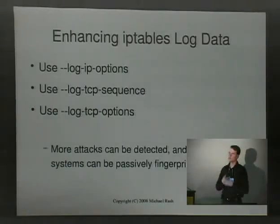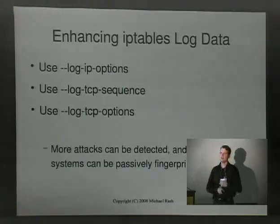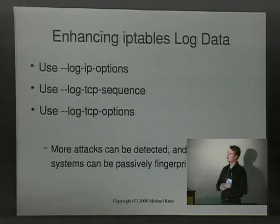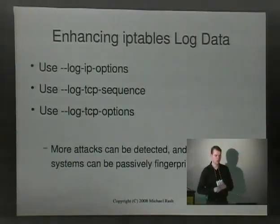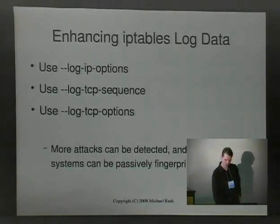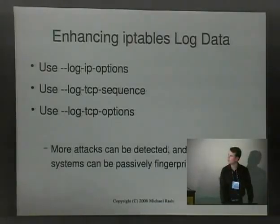If you're interested in getting really good IP tables log information, use the following command line arguments: '--log-ip-options' to get the options portion of the IP header; TCP sequence numbers if you like — though that can be a slight security risk as it exposes how your TCP stack generates sequence numbers; and '--log-tcp-options', which is probably the most important for passive OS fingerprinting. I'll make these slides available on cypherdyne.org as soon as the talk is over.